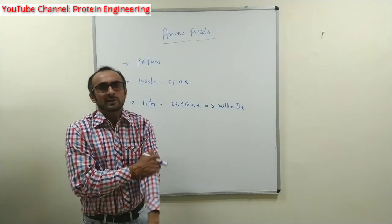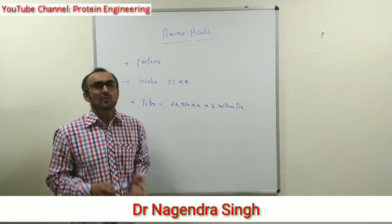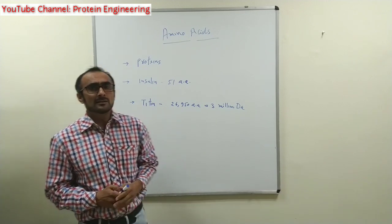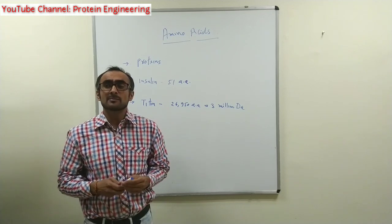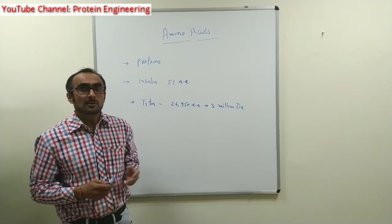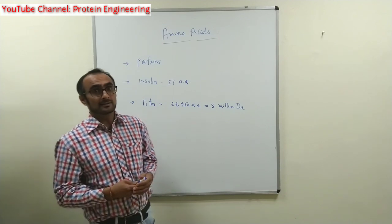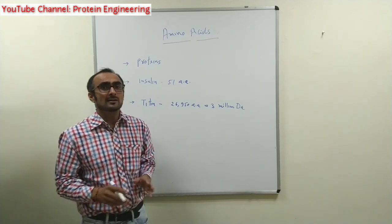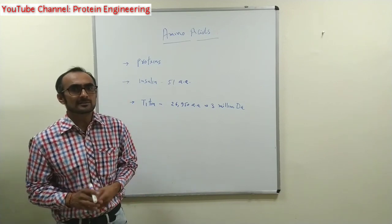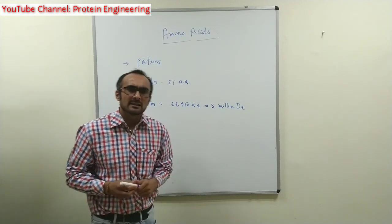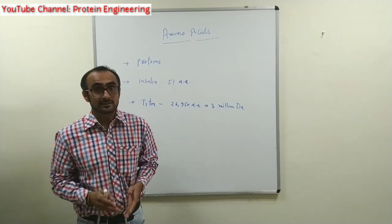Today we will talk about amino acids. Before that we need to understand their role. There are four major bio-macromolecules existing in biological systems: proteins, nucleic acids, lipids, and carbohydrates. Among these four, proteins are most important and most abundantly found in biological systems. These proteins are nothing but a polymer of amino acids.